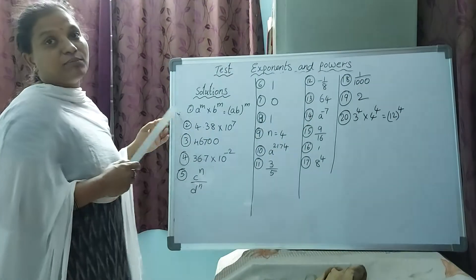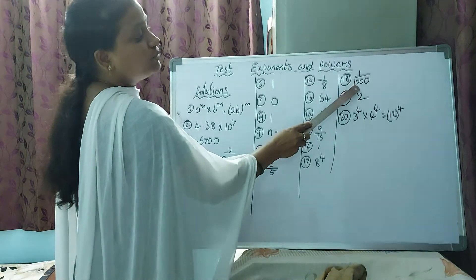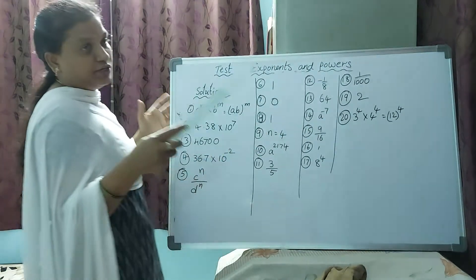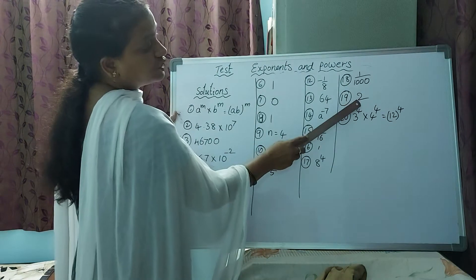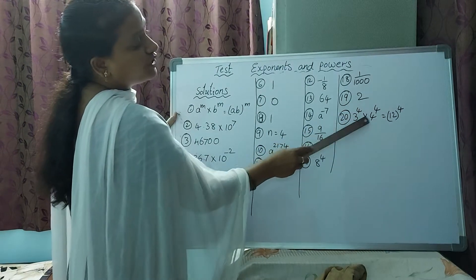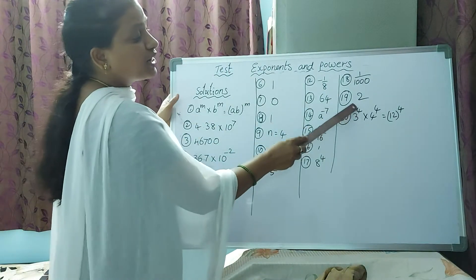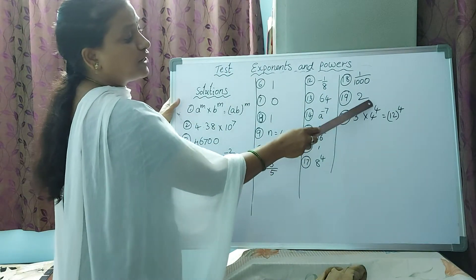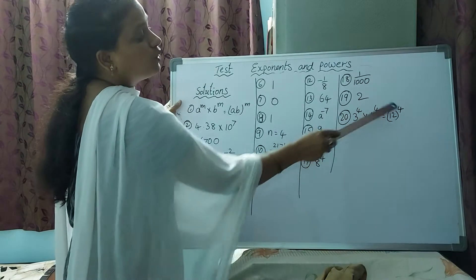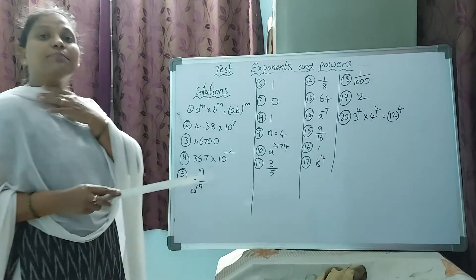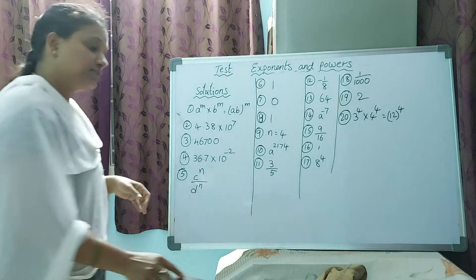One more: 8 power 4. Then (1/10) whole cube — whole cube means three times, so 10 × 10 × 10 = 1000. Next: 3 power 4 × 4 power 4 = 12 power 4, because a power m × b power m = (ab) power m — multiply 3 and 4 to get 12, same powers. This covers all of yesterday's exam solutions.